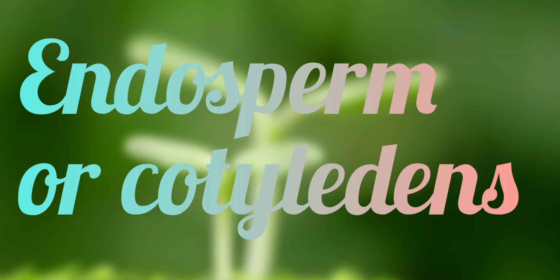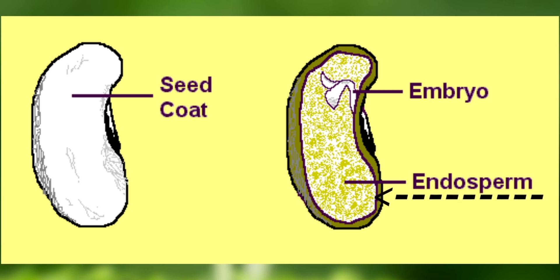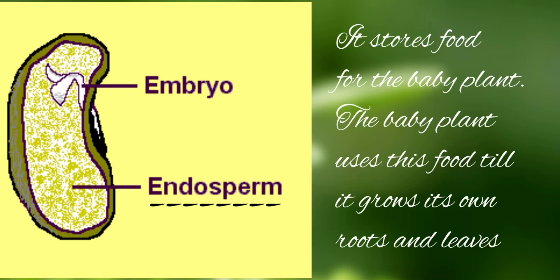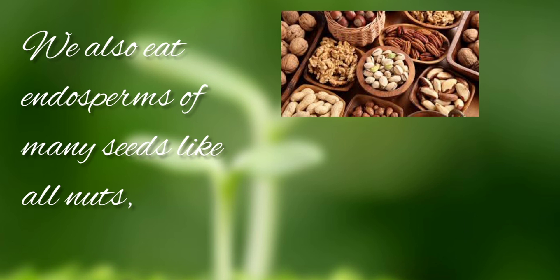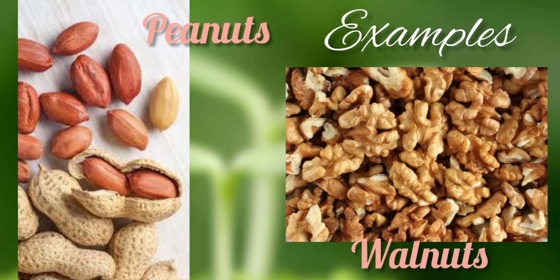Second, endosperm or cotyledins. Under the seed coat is the endosperm, which occupies the maximum part of a seed. It stores food for the baby plant. The baby plant uses this food till it grows its own roots and leaves. We also eat endosperms of many seeds like all nuts, as they are a rich source of carbohydrates, protein, vitamins and minerals — for example, peanuts and walnuts.